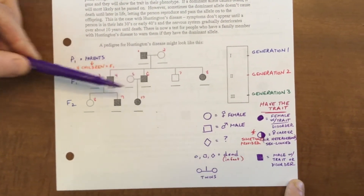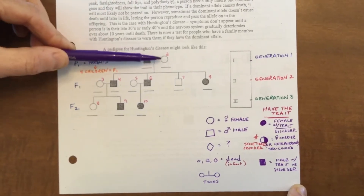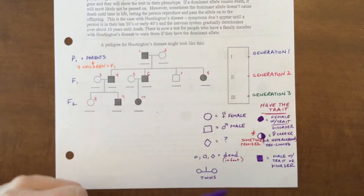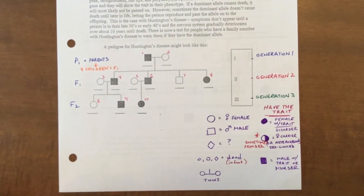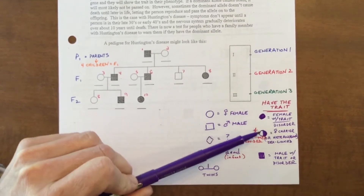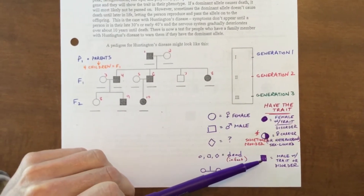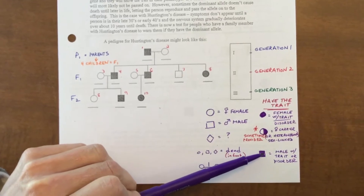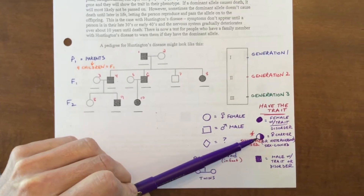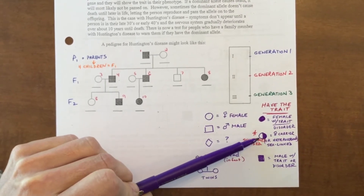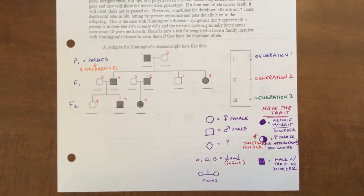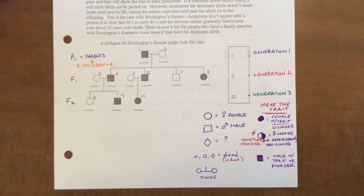The next thing you're going to look at is whether those circles and squares are shaded in or not. A shaded shape means that individual has the trait being studied. A filled-in circle means a female with the trait or disorder; a filled-in square means a male with the trait or disorder. If you see one that's half filled in, that means that individual is heterozygous.